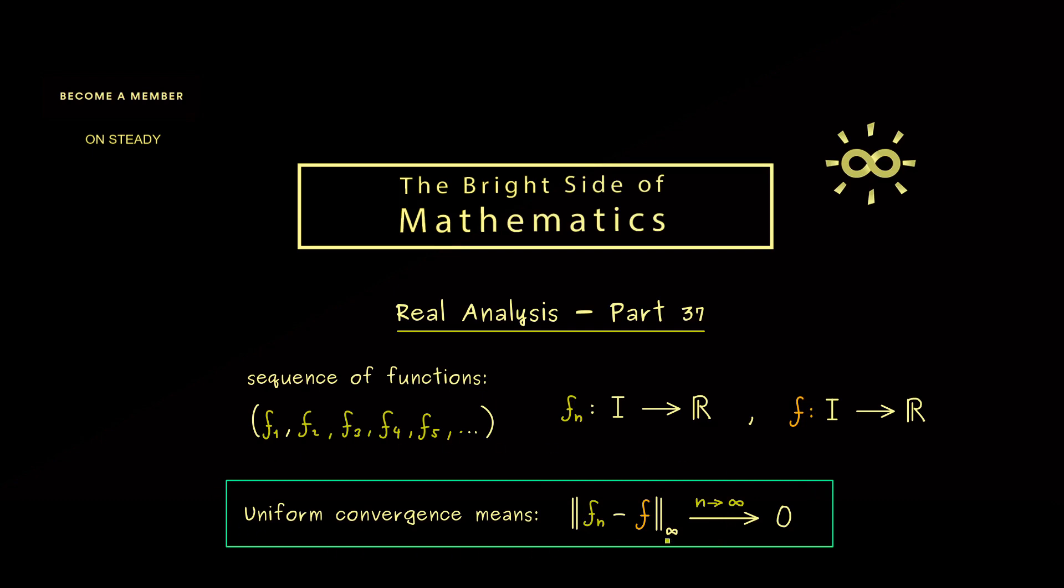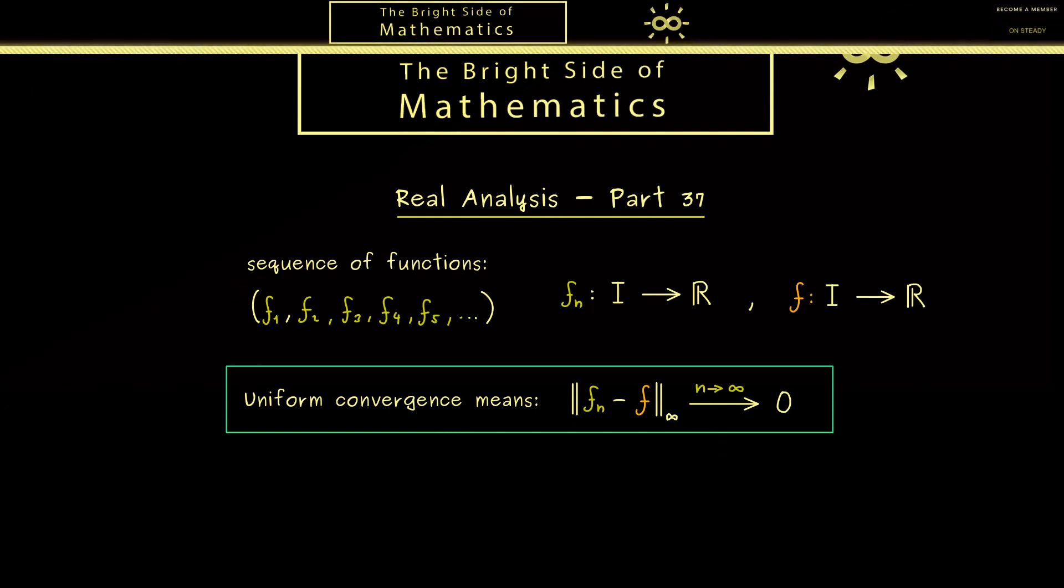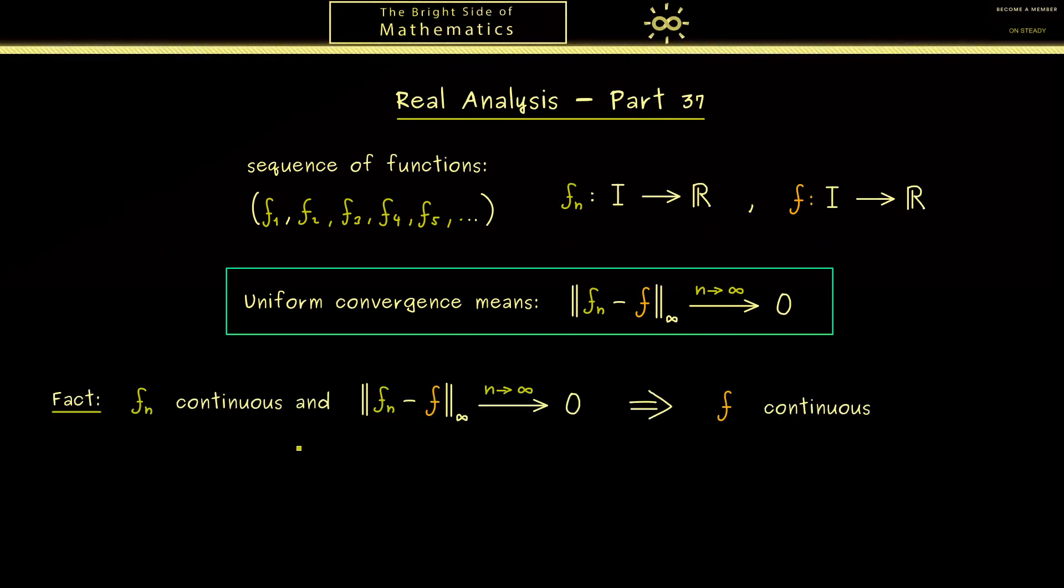This is a very strong property a sequence of functions can have. And as we discussed before, we already know it conserves continuity. This is an important fact you really should remember. In short, if we have that all the fn are continuous and we have uniform convergence, then the limit function f is also continuous.